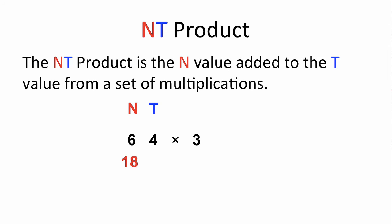Now for the 4 times 3 is 12, but for this one we only want the tens result. Now to get the NT product, we add the N value and the T value together, so we have 18 plus 1 is 19. So the NT product is 19.